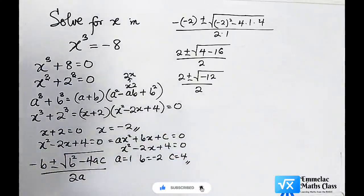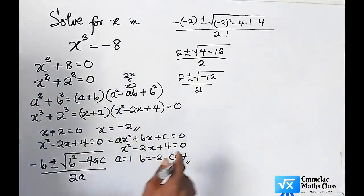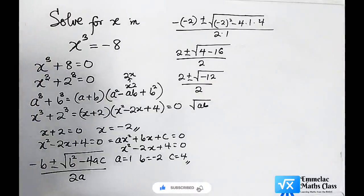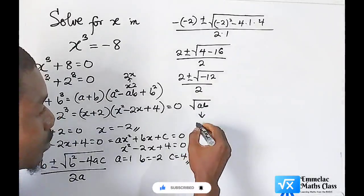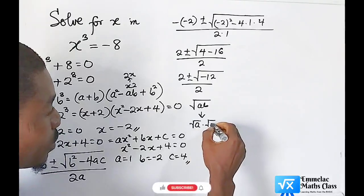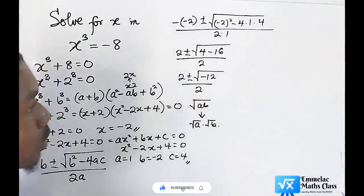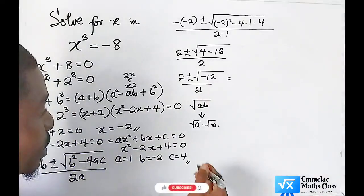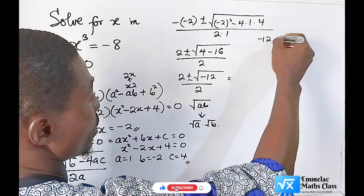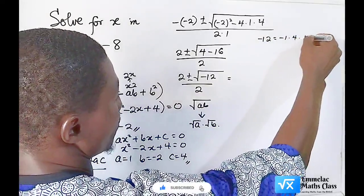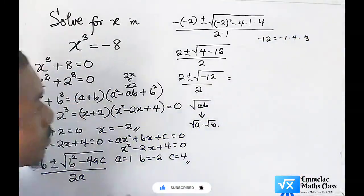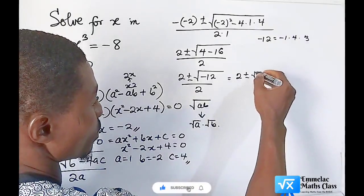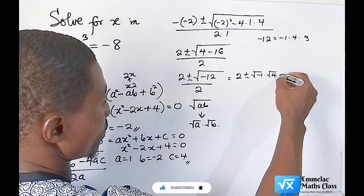Let us now find the value of the square root of negative 12. According to the law of surds, when you have a number, it must have two factors. The square root of ab can be expressed as the square root of a times the square root of b. The two factors we'll be having are √(-12) = √(-1 × 4 × 3).